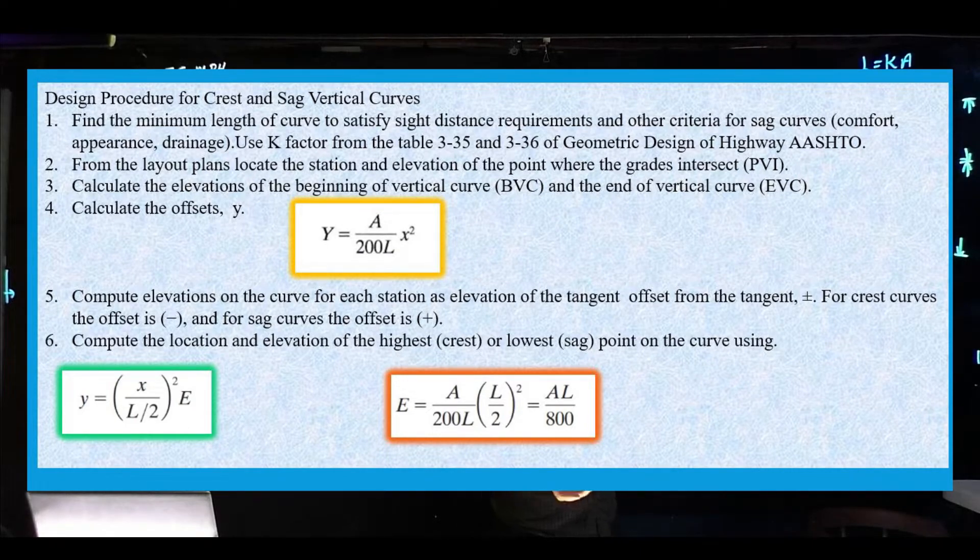We should use AASHTO's equation. We know we talked about there are five different ways we can calculate the minimum length of the curve. The curve could be based on appearance, drainage, comfort, and sight distance requirement. But here we're going to use the k factor from AASHTO table 335.